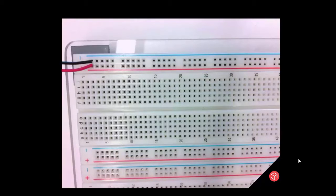Thanks to the internal row connection in each rail, this will supply power to the entire rail. So this entire rail now would be positive and this entire rail would be negative.